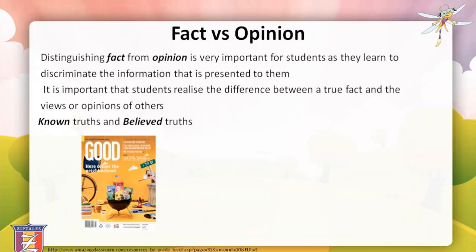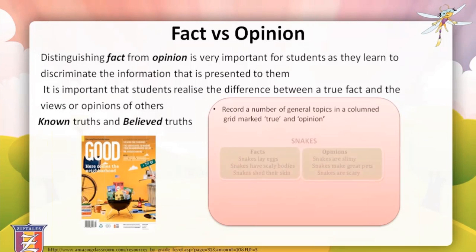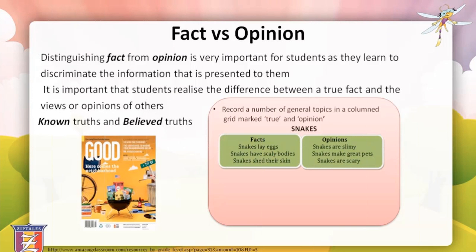Moving on now to distinguishing fact from opinion. Distinguishing fact from opinion means identifying the difference between something that is real and true — a fact — as opposed to something that is somebody's thoughts or ideas on a topic — an opinion. It's an important skill because it helps students filter information about what is known to be true in contrast to what is believed to be true. An activity could be to ask students to describe a variety of general topics using a data group, recording responses as either facts or opinions. For example, the topic is snakes: facts include they lay eggs and have scaly bodies; opinions include they're slimy, make great pets, or they're scary.